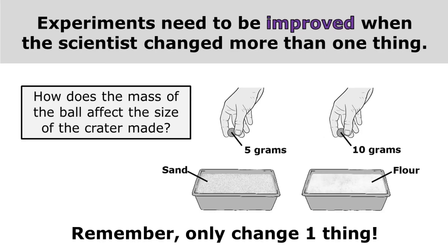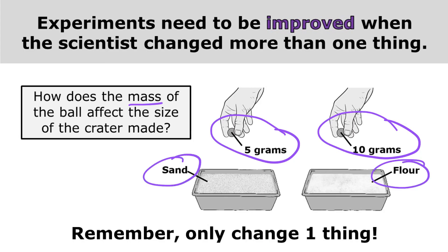You may also need to look at an experiment and determine how it can be improved. Experiments need to be improved when the scientist changed more than one thing — remember, you can only change one thing in an experiment. This investigation was designed to answer the question: how does the mass of the ball affect the size of the crater made? So we should have changed the mass of the ball to answer that question, but they also changed what the ball was being dropped into, and that won't work. We change one thing, we measure one thing, we keep everything else the same. So to improve this experiment, I would need to drop balls with different masses onto the same material.